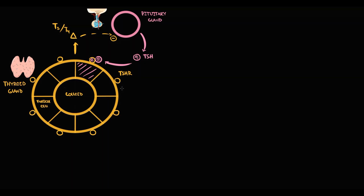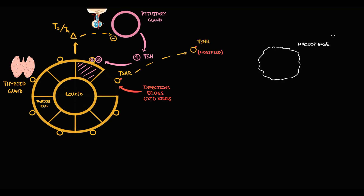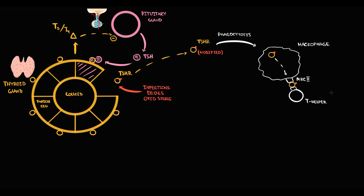But sometimes something can go wrong. Infections, drugs, or oxidative stress can cause damage to follicular cells of the thyroid gland. This injury can slightly change the normal structure of the TSH receptor — we call this post-translational modification. When the cell dies, the modified TSH receptor is released into the blood. Macrophages consume this receptor and present parts of it on MHC2 receptors to T-helpers, wanting to determine whether it is normal material or something pathogenic.